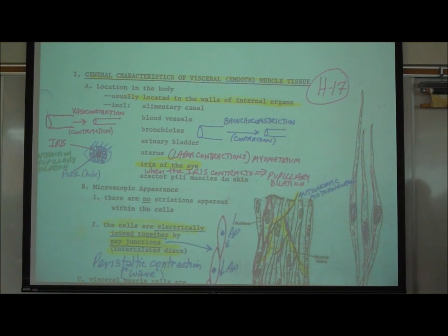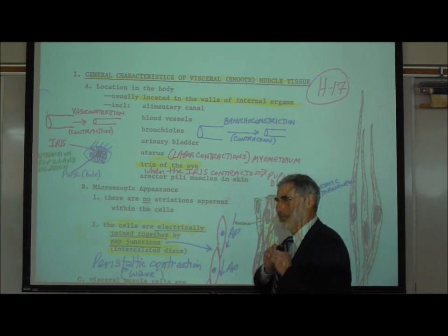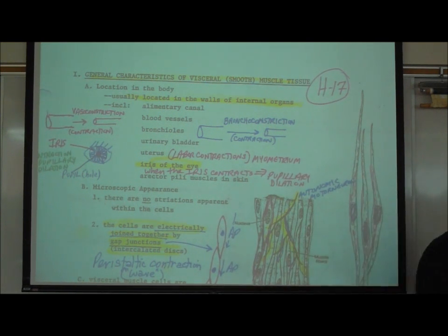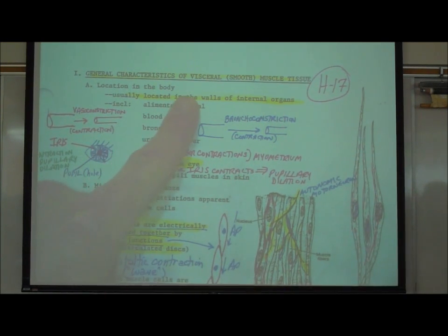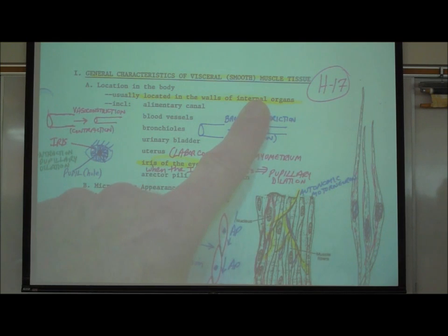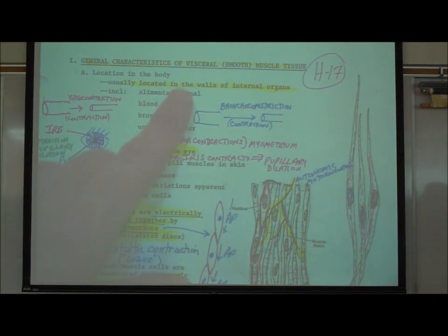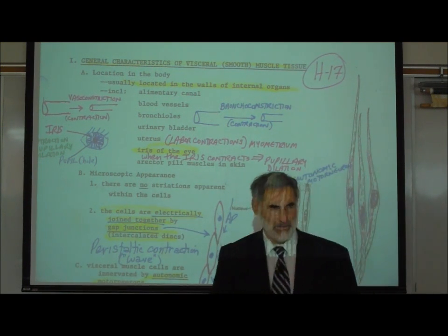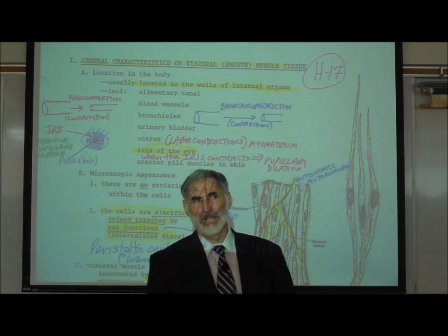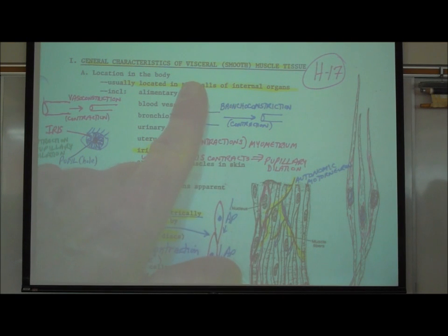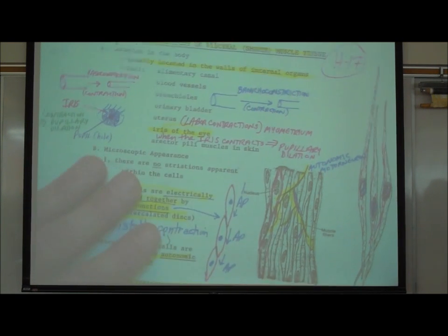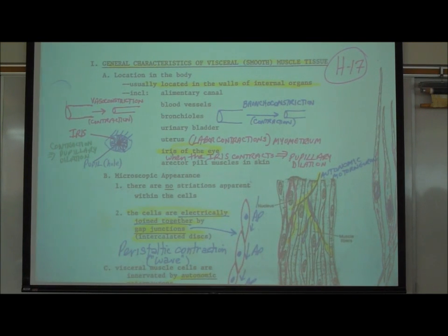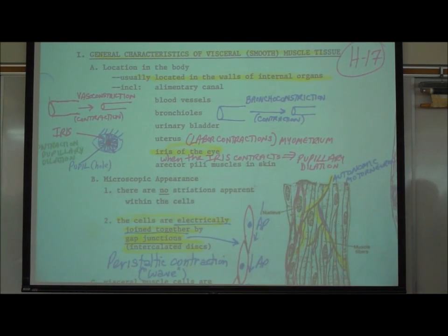Skeletal muscle is called that because the muscle is attached to our bones, our skeleton. Let's start with visceral smooth muscle. It's called visceral because visceral means internal organ — we learned that on page A3. This is muscle that's in the walls of our internal organs. Let's identify some internal organs of our body that have visceral muscle.